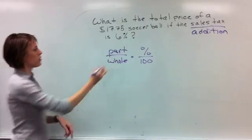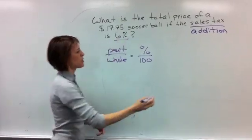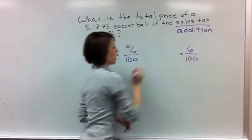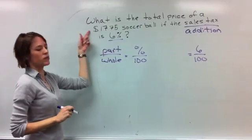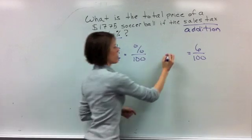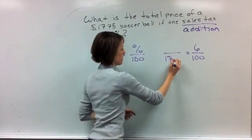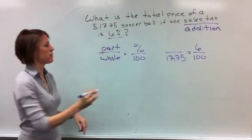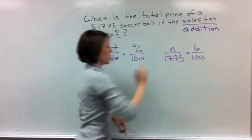We're going to do our part and our whole is equal to our percent over 100. So based on our problem, we already know that our percent is 6%, so that would be 6 over 100. And then our whole amount is the $17.75, how much we're paying for the soccer ball. And then we're trying to find the part, the 6% of it, so this is going to be our variable, our n.